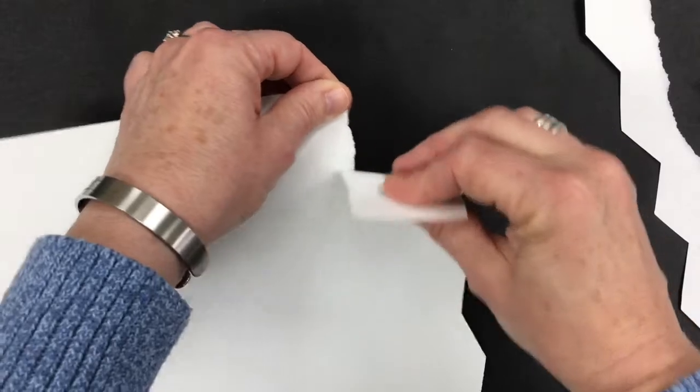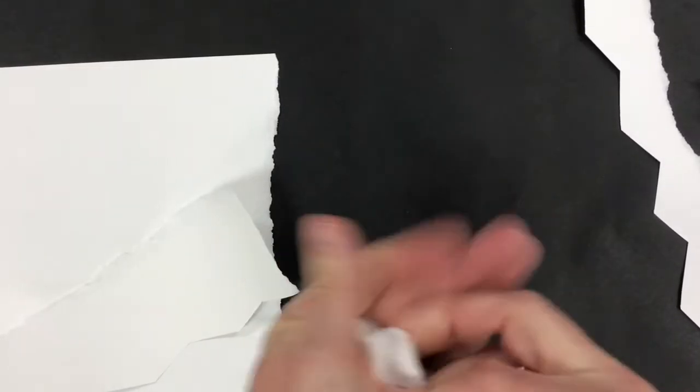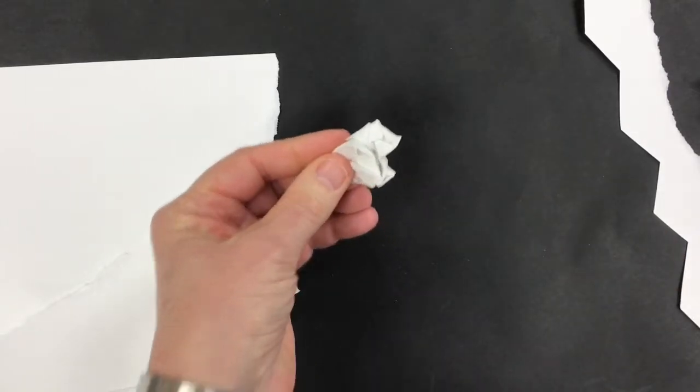Next I'm going to show you how to scrunch the paper. I'm going to rip a part off again, make it into a little smaller piece, and roll it up like a ball—that's scrunching. I can do this as many times as I want.